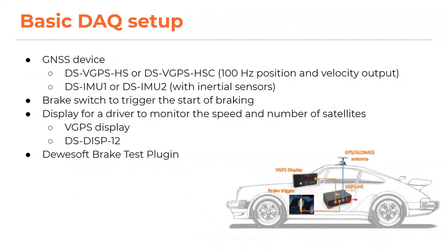How does a basic data acquisition system setup look like? You need a GNSS device that provides your input data. With Deweysoft, you can use vGPS or IMU devices, which both have GNSS receivers inside. IMU devices also have inertial sensors, where you can get pitch information. With a basic setup, you also use a brake switch to trigger the start of braking. You can add a display for the driver to monitor speed and number of satellites — either a vGPS display or a DS 12-inch display. You need a PC with DewysoftX software installed and the Deweysoft brake test plugin.